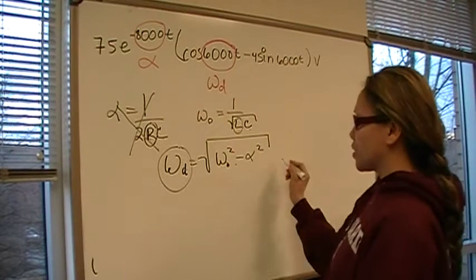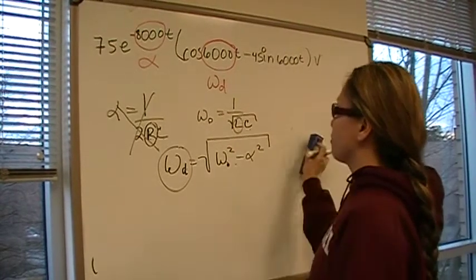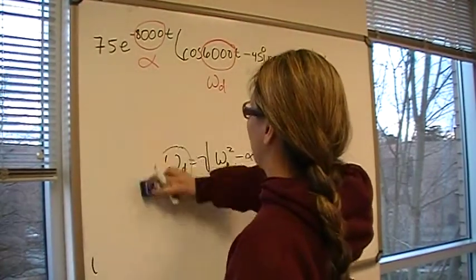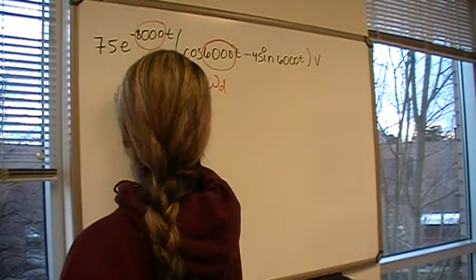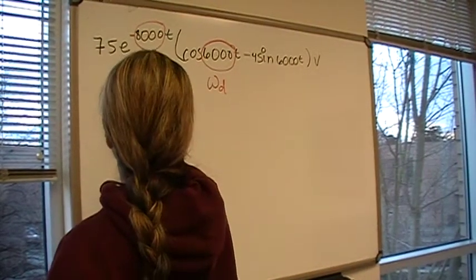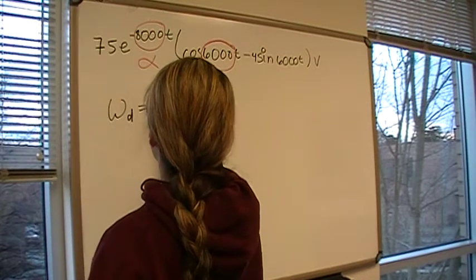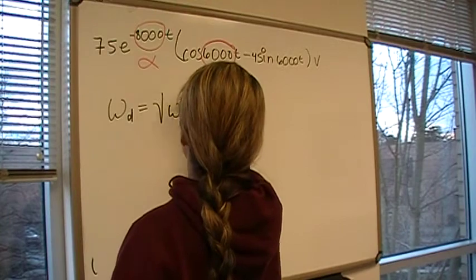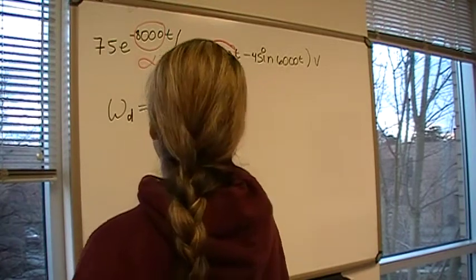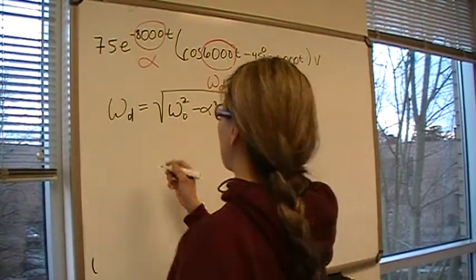We have omega D equals the square root of omega 0 squared minus alpha squared. Let's plug in the variables that we know.